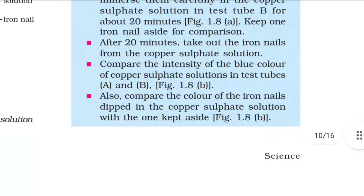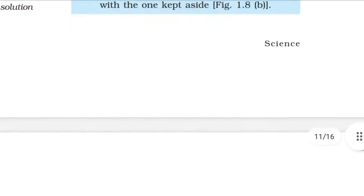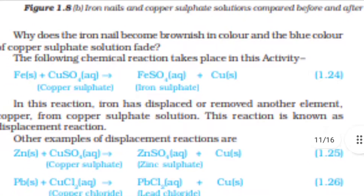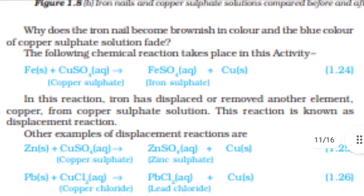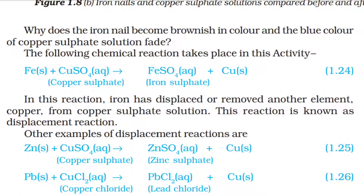After 20 minutes, take out the iron nails from the copper sulfate solution. Compare the intensity of the blue color of copper sulfate solutions in test tubes A and B. Also, compare the color of the iron nails dipped in the copper sulfate solution with the one kept aside. Why does the iron nail become brownish in color and the blue color of copper sulfate solution fade? The following chemical reaction takes place in this activity.